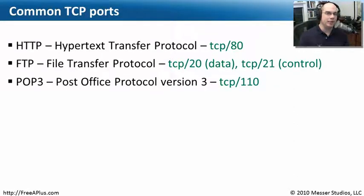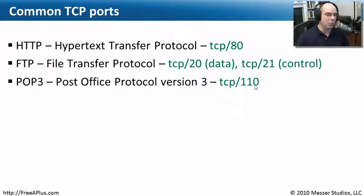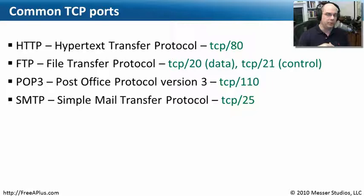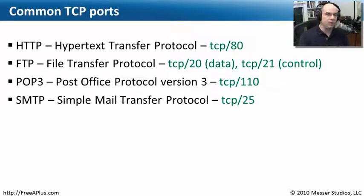Whenever we pull data down from a mail server into our mail client, we're very often using POP3 — Post Office Protocol Version 3 — which uses TCP port 110. The next protocol is SMTP, Simple Mail Transfer Protocol. POP3 is what we use to retrieve our mail; to send mail, we use SMTP. Whenever we send traffic to an SMTP server, we're sending it out to TCP port number 25.